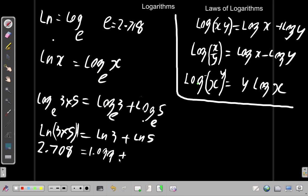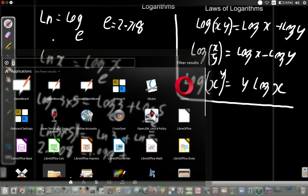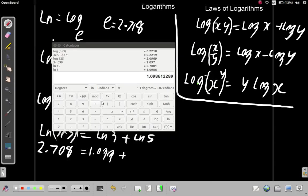Plus ln 5, and what is ln 5? ln 5 equals 1.609. So ln 5 is 1.609.